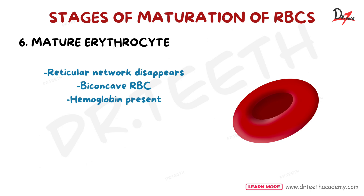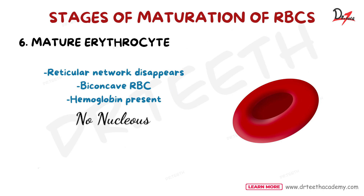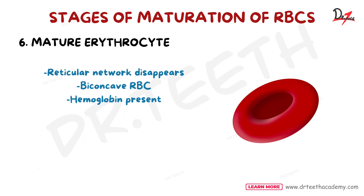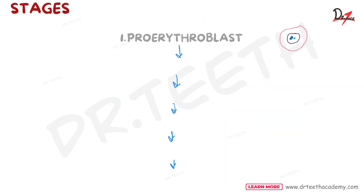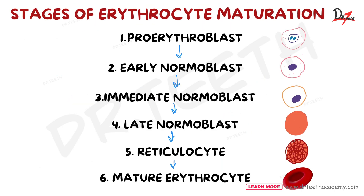In the matured erythrocyte, the cell decreases in size to a diameter of 7.2 micrometers. The reticular network disappears and the cell becomes the mature RBC — biconcave in shape, with hemoglobin present but no nucleus. It requires seven days for the pro-erythroblast to become fully developed and matured into an RBC — another important exam question. A flow chart showing all these stages is displayed here; please pause the video to review it before proceeding.